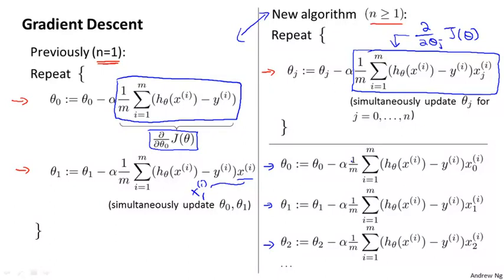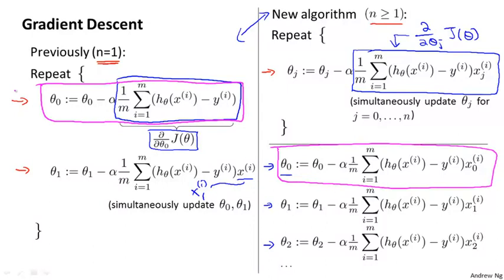If you look at the update rule for theta 0, what you find is that this update rule here is the same as the update rule that we had previously for the case of n equals 1. And the reason that they're equivalent is because in our notational convention, we had this x0 equals 1 convention, which is why these two terms that I've drawn the magenta boxes around are equivalent.